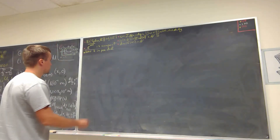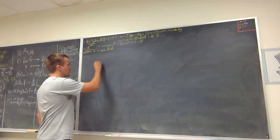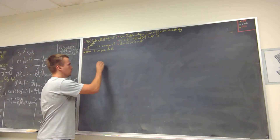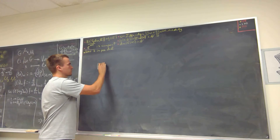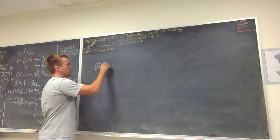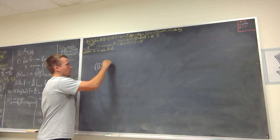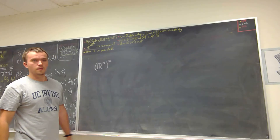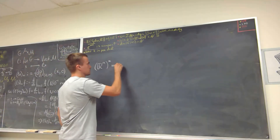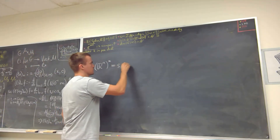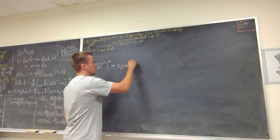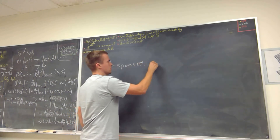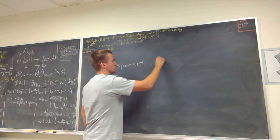Hello guys. In this video I want to show that if I take the dual vector space — in this case R^n dual — this vector space is going to be a span of e1 dual through en dual.